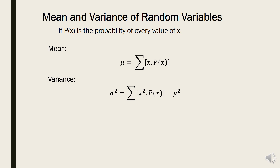For the variance, using the symbol sigma squared, the formula is: sigma squared is equal to the summation of x squared times p of x, minus mu squared. We compute the summation of the product of the square of the random variable times its corresponding probability, then subtract the square of the mean.